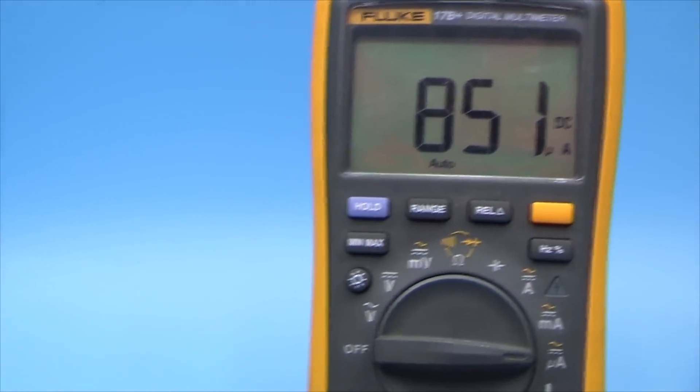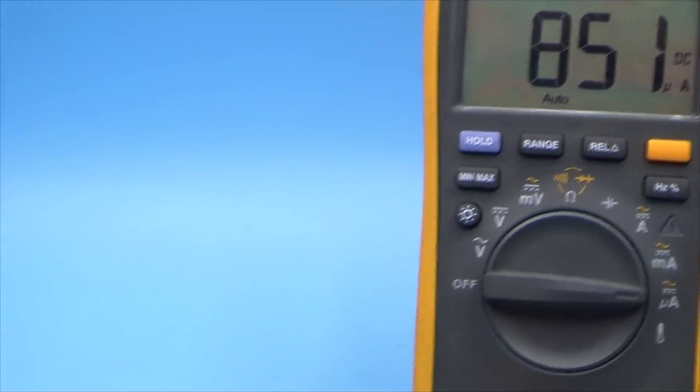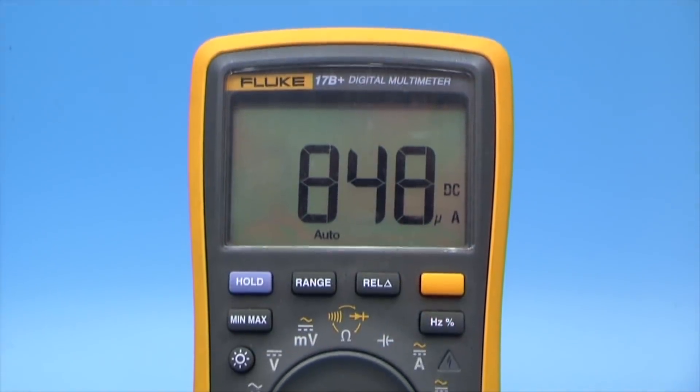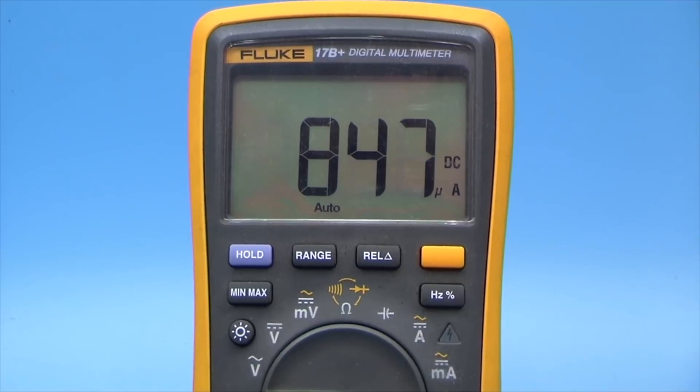The circuit doesn't consume much. From a power source of 5 volts, the current consumption without load is only 850 microamperes. So you can safely use it as a switch, for example, in a flashlight.